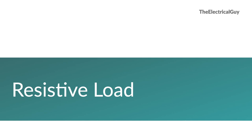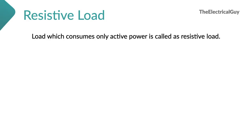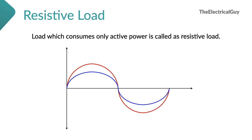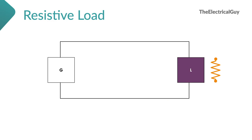Let's first understand the resistive load. Load which consumes only active power is called as resistive load. And if you look at the voltage and current waveforms of such load, you will find that the voltage and current are perfectly in phase with each other. When I say they are perfectly in phase, that means both waveforms reach their peak value at the same time, and they also reach the zero value at the same time — one example you can see on your screen.